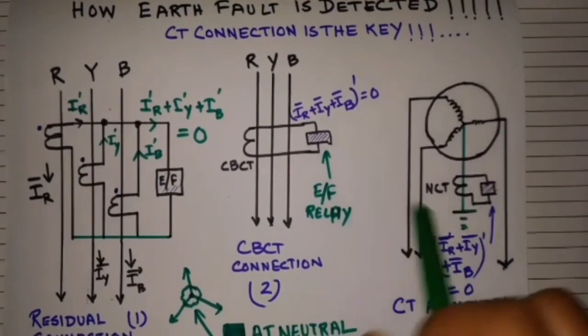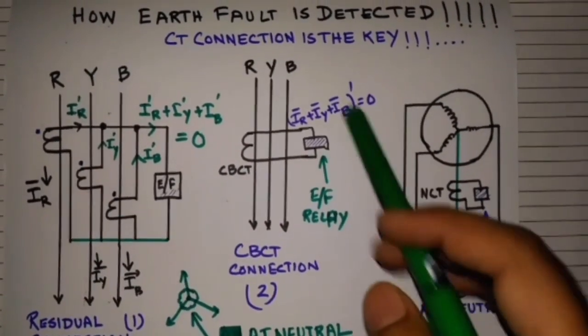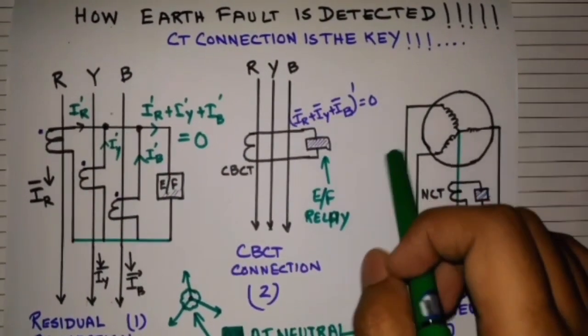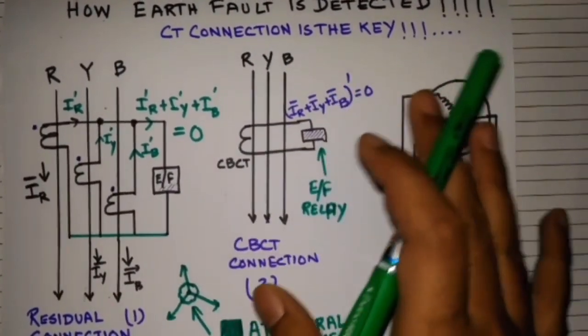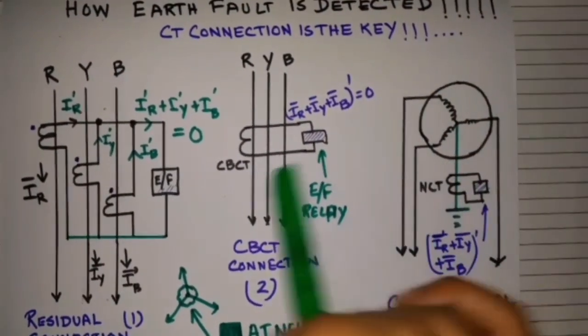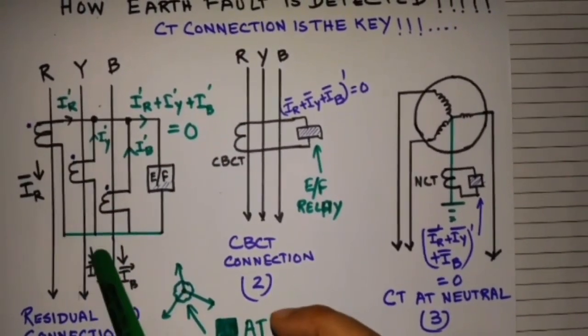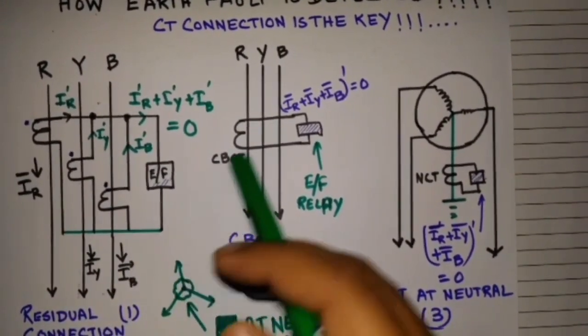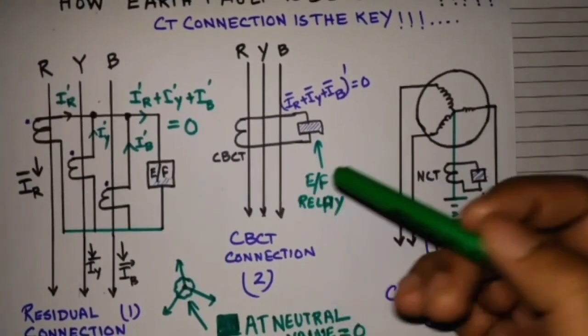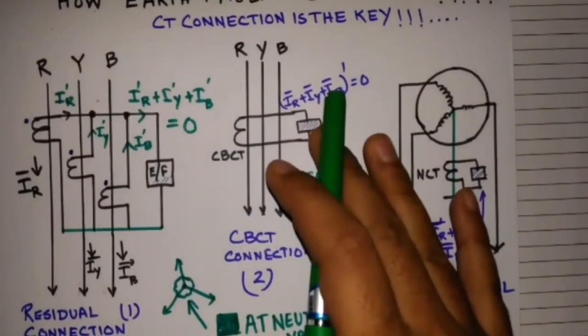So these three are the basic principle, basic CT connection, by which the earth fault is detected. The earth fault relay has no such special element. It only detects the earth fault due to their CT connection. The CT connection is such that it can only be energized during an earth fault. For any other type of fault, it will not energize.